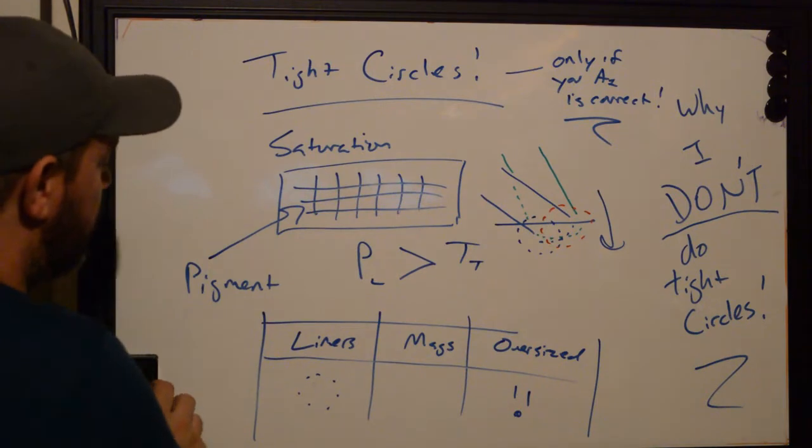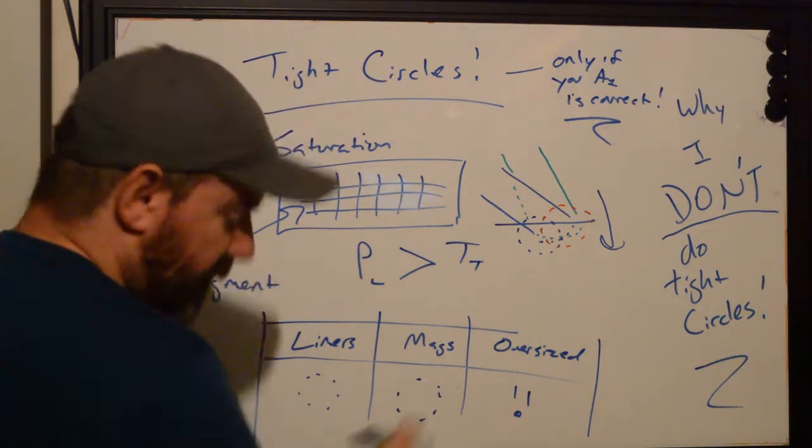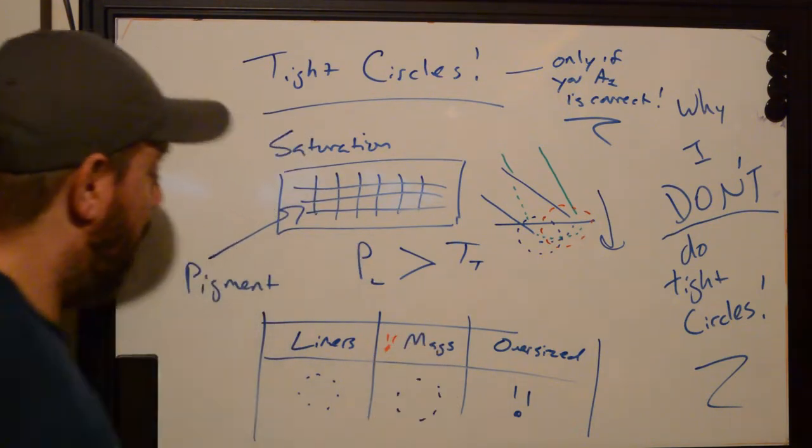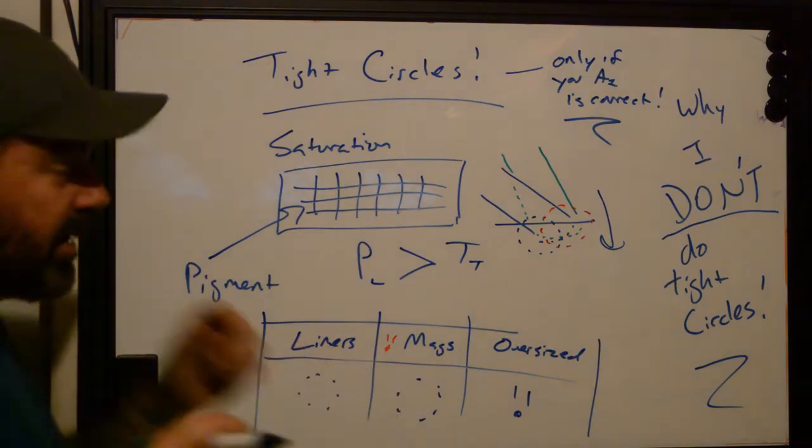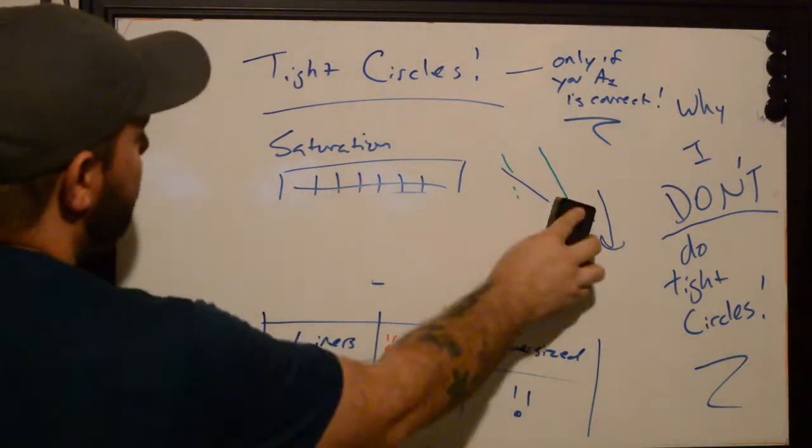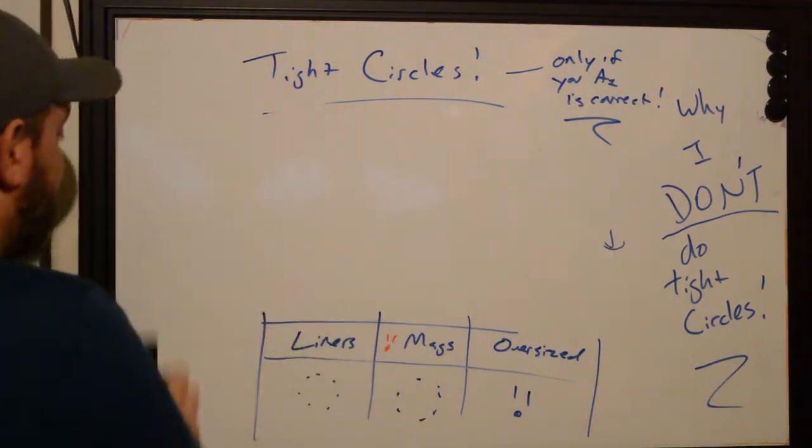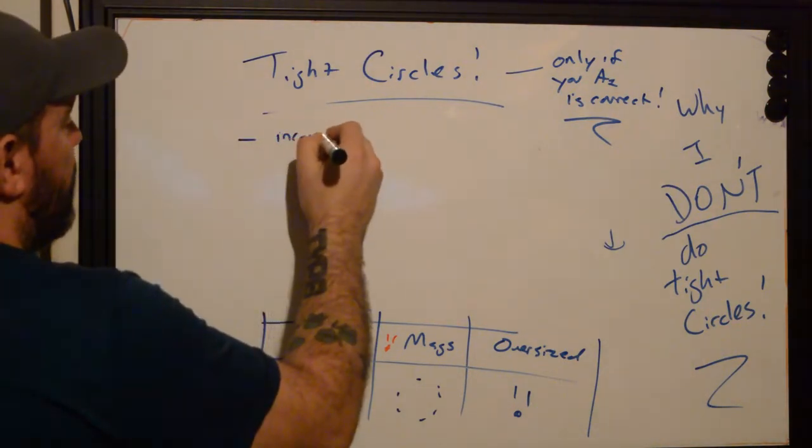What are we going to do instead? Let's think about this. When it comes down to, we get to this with all of them, let's just knock it all out. Liners, mags, and oversized groupings for rounds. The reason why we don't do tight circles is because it's going to be inconsistent.